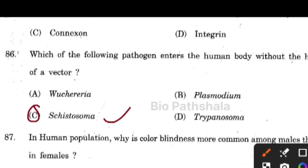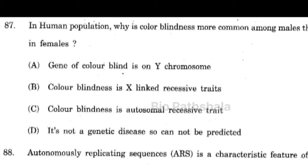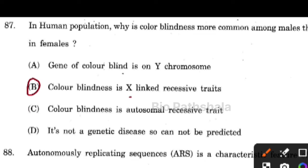In human population, why is color blindness more common among males than in females? The correct option is: color blindness is an X-linked recessive trait. Females have two X chromosomes while males have only one X chromosome.